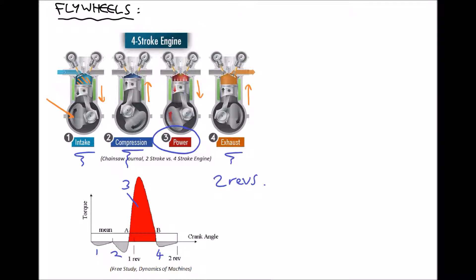What does this mean in practical terms? The crank attached to our cylinder isn't going to move with a smooth angular velocity. In fact the angular velocity would resemble what we see on the torque-crank angle diagram. We would expect the rotational speed of the shaft to slow down during stages one, two, and four, and only speed up during stage three. So we end up with a speeding up and slowing down of the shaft in response to pulses of power — the shaft doesn't have a constant, uniform velocity.